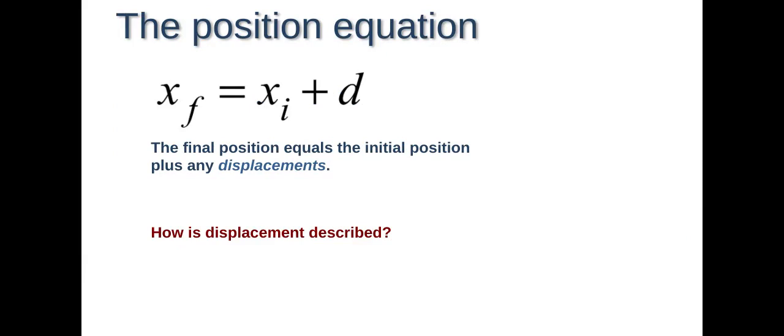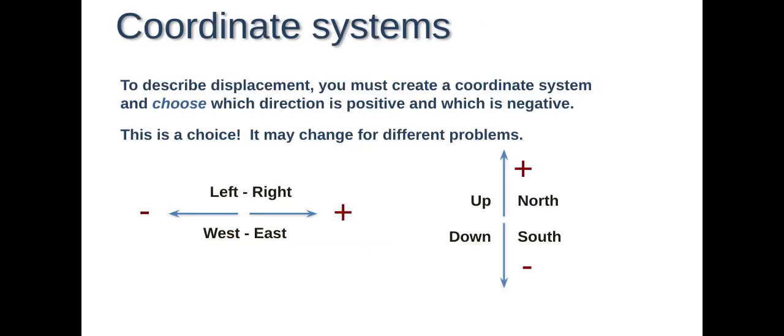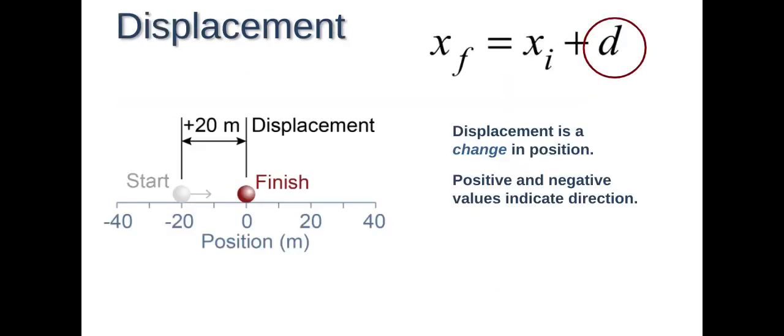So how is displacement described? Your final position equals the initial position plus any of your movements. To describe displacement, you must create a coordinate system and choose which direction is positive and which is negative. This is a choice that may change with different problems. Traditionally, it has set values. Right and east is positive, while left and west are negative on the X plane. On the Y, north and up are positive, and south and down are negative. Those values show you what direction you're moving based on either a plus or minus sign.